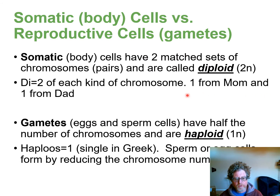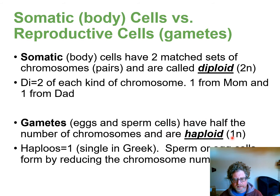Our body cells have two matched sets of chromosomes and are called diploid. Gametes — eggs and sperm — only have one of every kind of chromosome. In humans, gametes have 23 chromosomes and are called haploid. Haploid means one set, as opposed to diploid which means two sets.